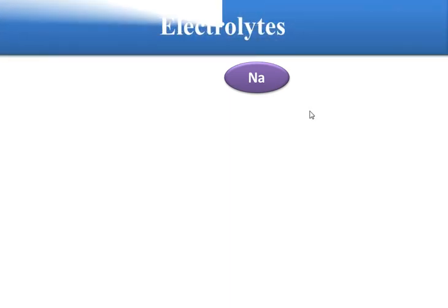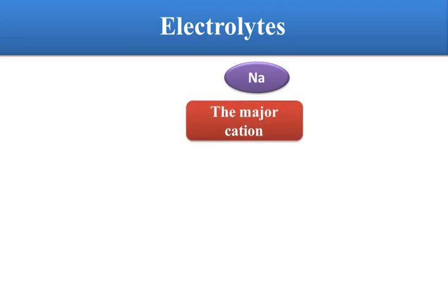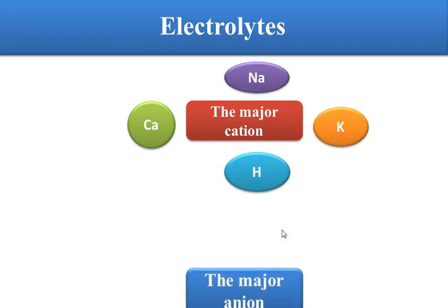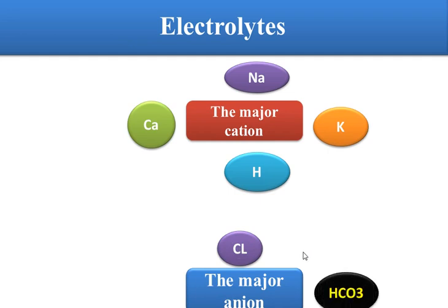What are the important electrolytes in the human body? We have four major cations and three anions. The four major cations are natrium, sodium, calcium, and hydrogen ion. The major anions are chloride, bicarbonate, and phosphate. This concludes the section about water and electrolytes.